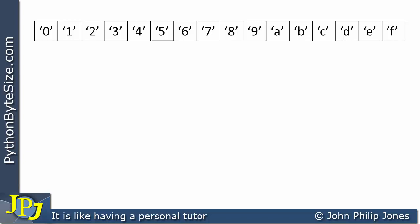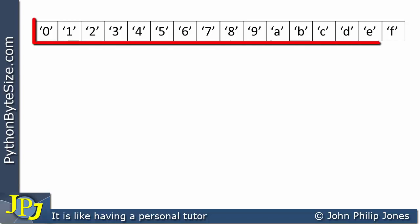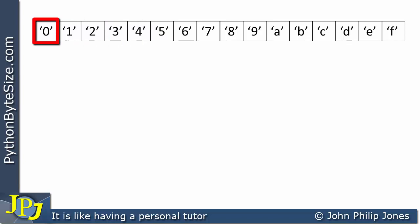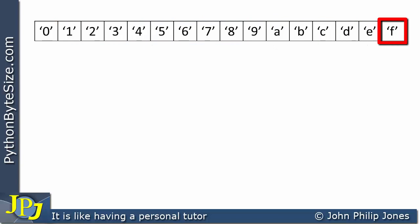This is a schematic representation of a list in Python. If we look at the elements of the list, we have '0' — a string of length 1 that contains 0. Here we have another string of length 1 that contains 1, and we can come all the way up to here where we have another string of length 1 that contains F.